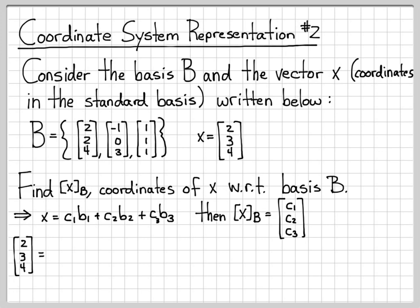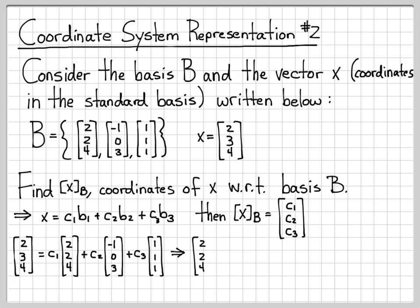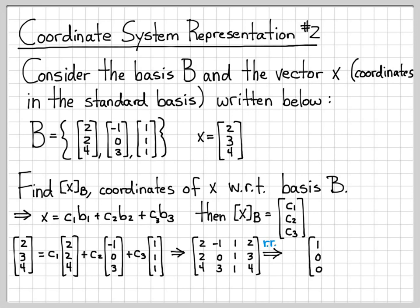That's pretty easy to do — I can solve this by just solving a system of equations. I'm trying to write the vector x as c1 times this vector, plus c2 times this vector, plus c3 times the vector 1, 1, 1. I can rewrite this as an augmented matrix, with the b vectors on the left and x on the right side, solving for the unknowns c1, c2, and c3. This really just goes back to the earlier videos on solving a linear system of equations. I'm going to do row reduction, skipping the intermediate steps.